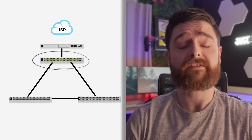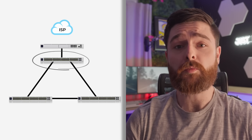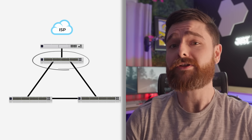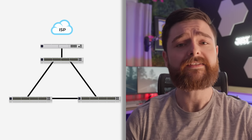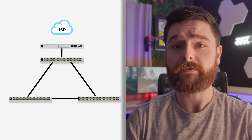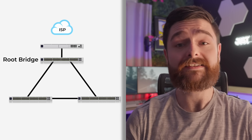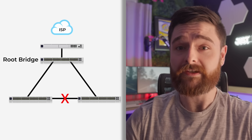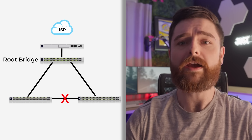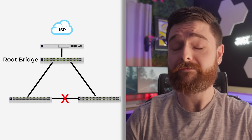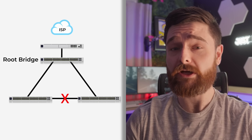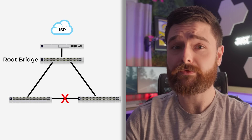But how does STP decide where to place this break in the loop? There is definitely a most efficient place to put it. The switch closest to the router is generally where we want all of the traffic to route — at least the majority of the traffic. We would consider this the root switch or the root bridge. Ideally, we break the loop opposite of this, as far away as possible. That way, whenever the traffic is routed from the remote switches, they don't have to go through so many hops.